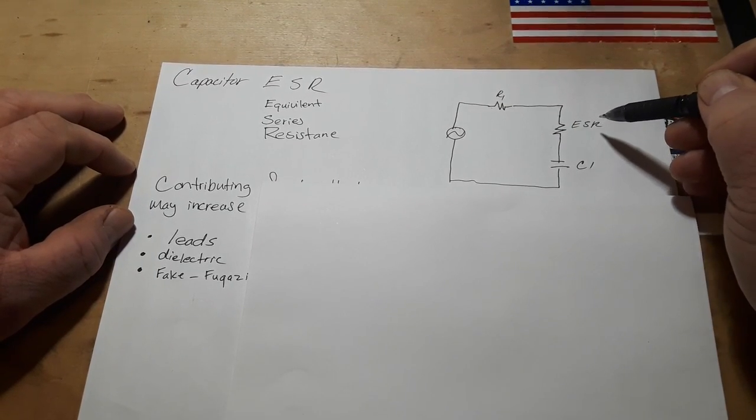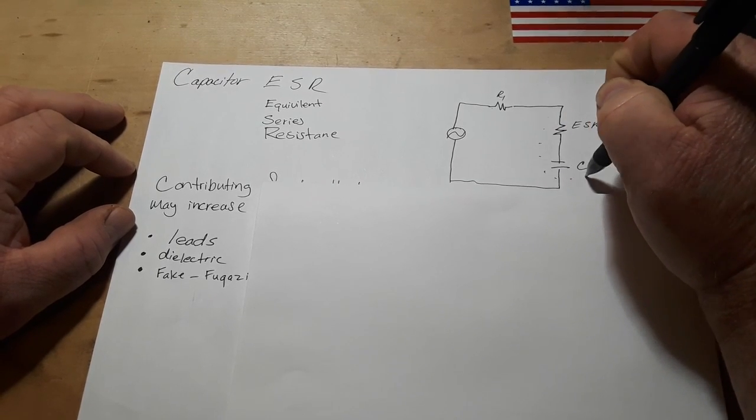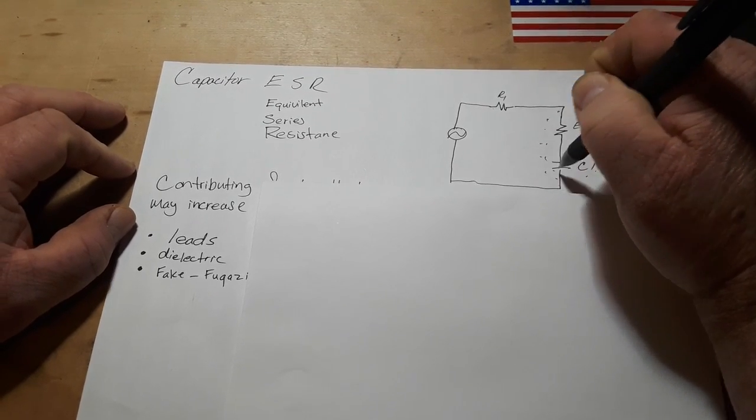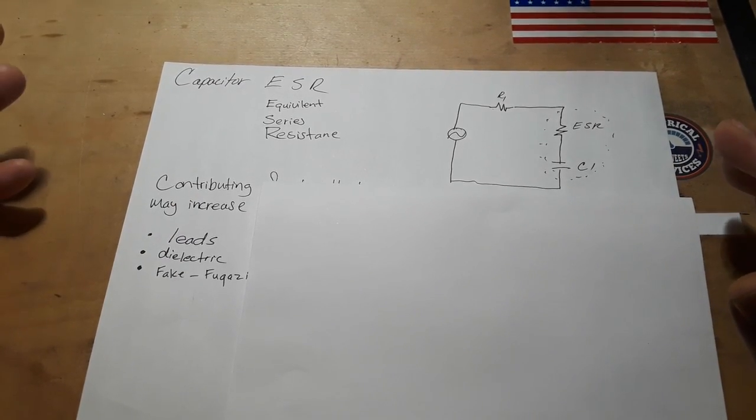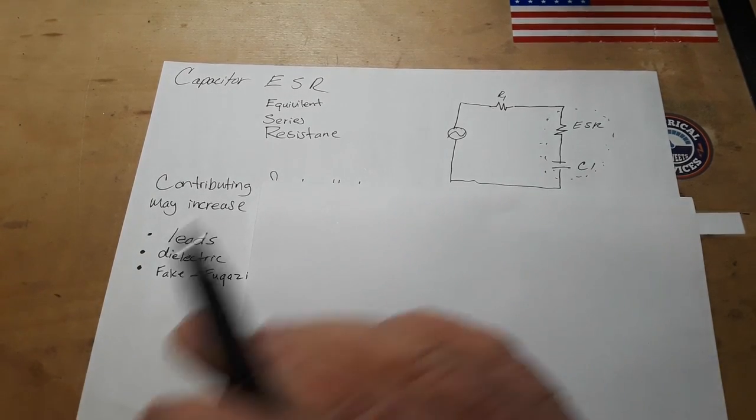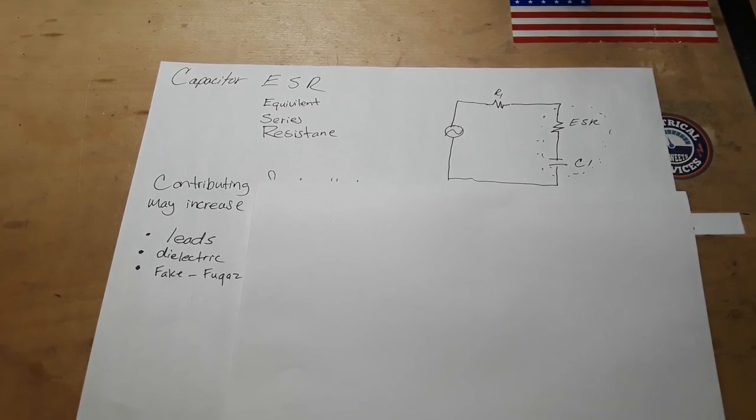This one here that says ESR is just like another resistor in series with our capacitor. And that's bad. You're introducing resistance, you're introducing noise. Because capacitors like this are used largely in power supply filtering, which you want to be a clean signal.